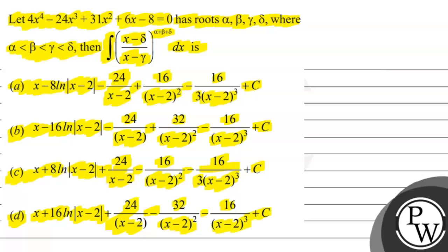So, हमने यहाँ पर लेट करने की — 4 times of x raised to power 4 minus 24x cube plus 31x square plus 6x minus 8, यह हमारा equal है 0 के। इसके roots alpha, beta, gamma, delta के हैं। Alpha less है beta से, beta less है gamma से, gamma less है delta से। तो इनकी value क्या होगी — integration of (x minus delta) divided by (x minus gamma) raised to power (alpha plus beta plus delta) dx। हमारे पास 4 options में से कौन सा option correct होगा।